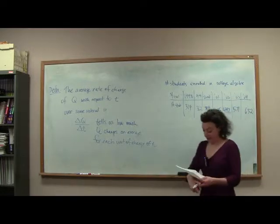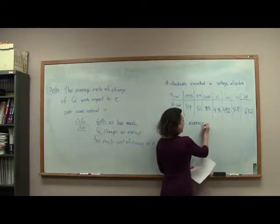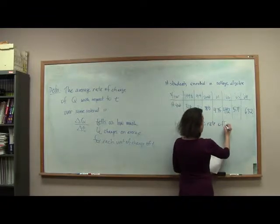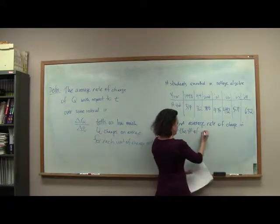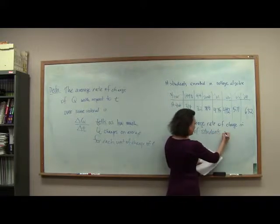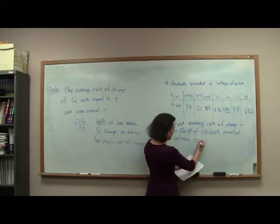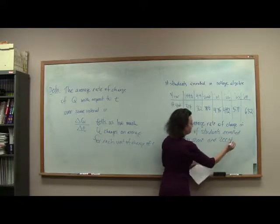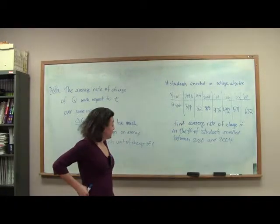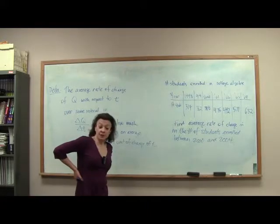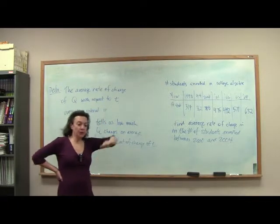All I'm going to ask us to do is find the average rate of change in the number of students enrolled between the years 2000 and 2004. We're going to compute this and then interpret it. We're wanting to find a rate, so we know we're going to look at a ratio.